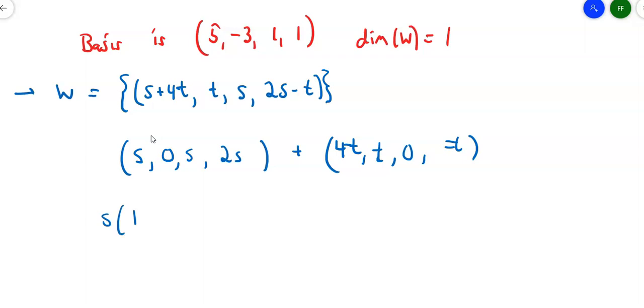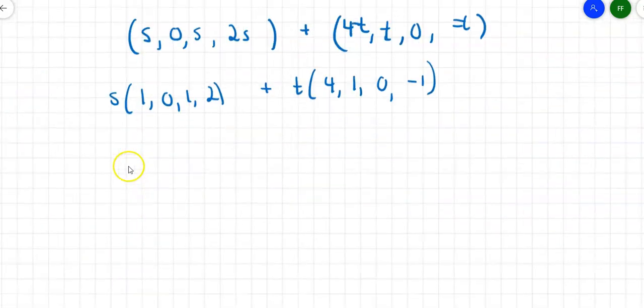So now let's pull out that S and I get (1, 0, 1, 2). Pull out the T and I get (4, 1, 0, -1).